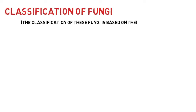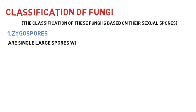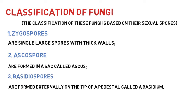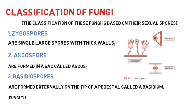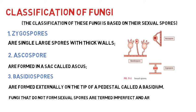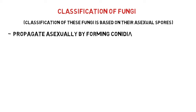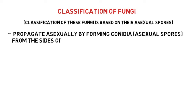Some fungi reproduce sexually by mating and forming sexual spores. The classification of fungi is based on their sexual spores: zygospores are single large spores with thick walls; ascospores are formed in a sac called an ascus; basidiospores are formed externally on the tip of a pedestal called a basidium. Fungi that do not form sexual spores are called imperfect fungi and are classified as Fungi Imperfecti. Some fungi propagate asexually by forming asexual spores called conidia from the sides and ends of specialized structures.